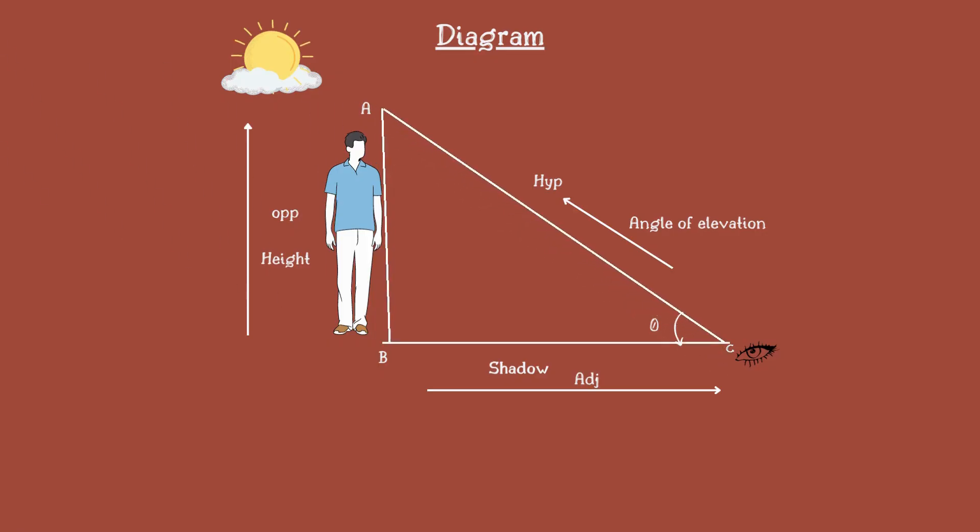Firstly, draw a right angled triangle as shown in the above figure. AB is represented as height of man, BC is represented as shadow, AC is represented as angle of shadow of a man in sun. We want to find the angle of elevation of sun.